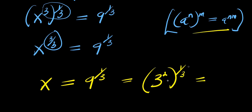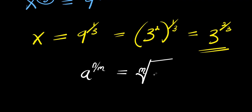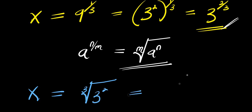Applying the identity, 9 is 3 squared, so 9 to the power of 1 over 3 equals 3 to the power of 2 over 3. That is the value of x. Alternatively, using the identity a to the power of n over m equals the m-th root of a to the power of n, my x equals the cube root of 3 to the power of 2, which equals the cube root of 9, because 3 squared is 9. So the cube root of 9 is my final answer.